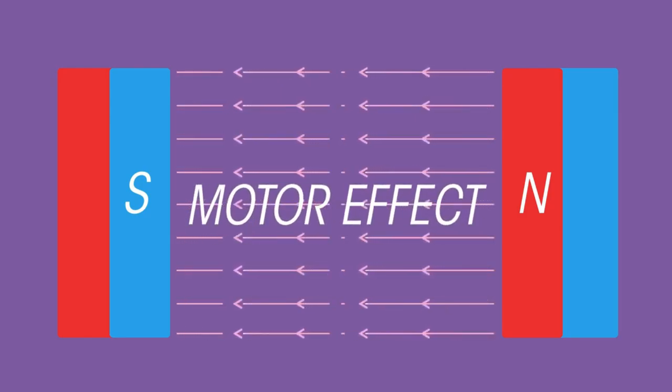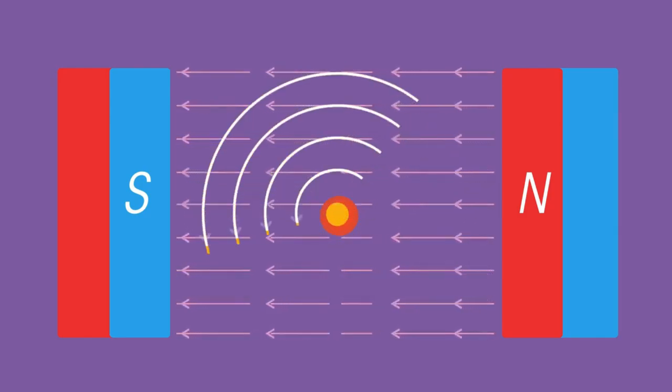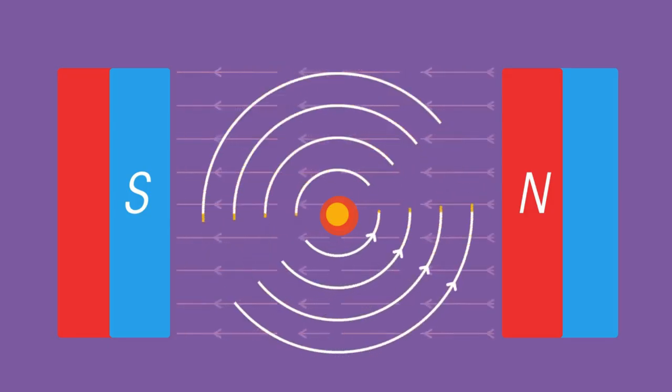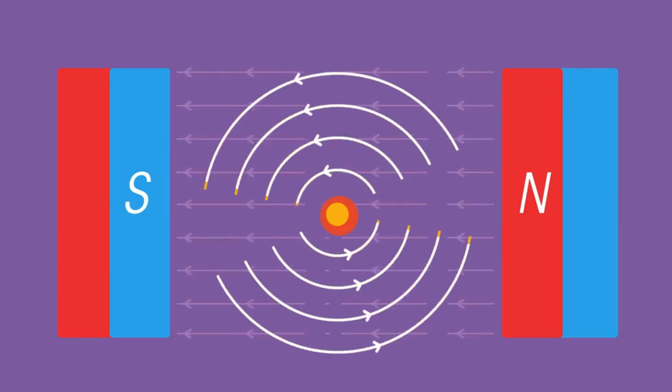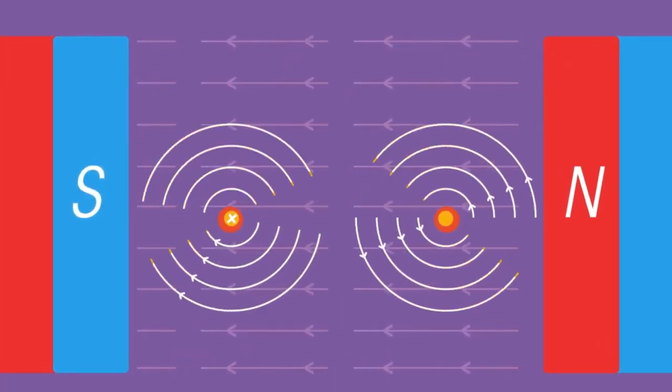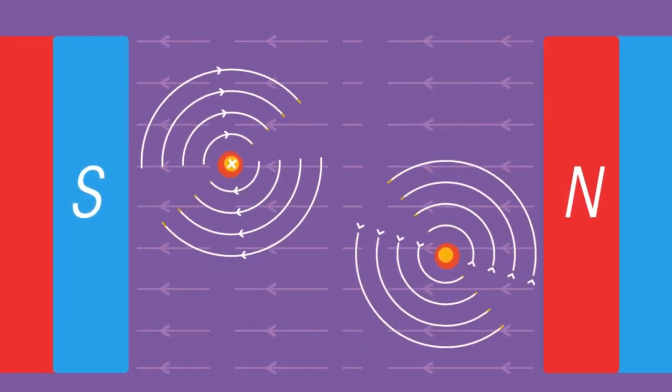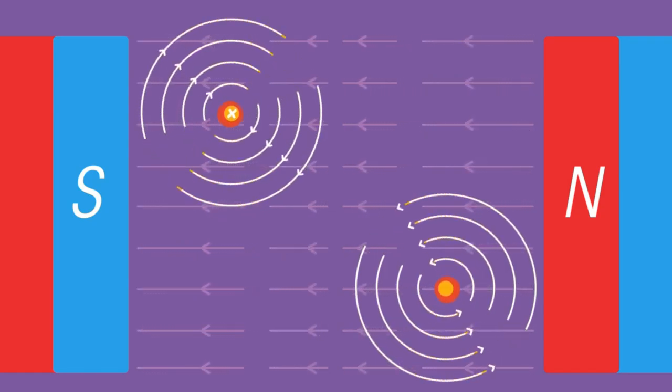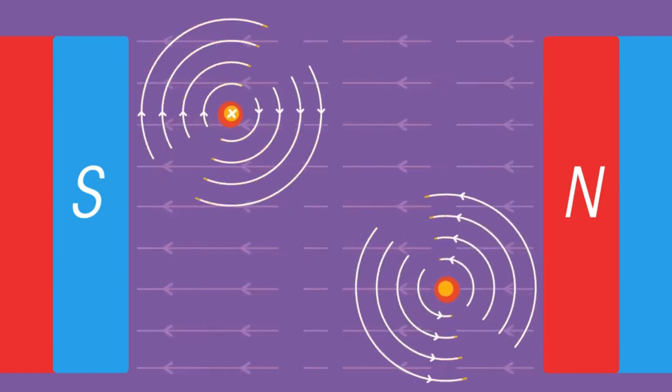Now reverse the current - this experiences a force in the opposite direction. Now place both wires in the same field. One wire will be pushed up, the other down, but we don't have circular motion yet.